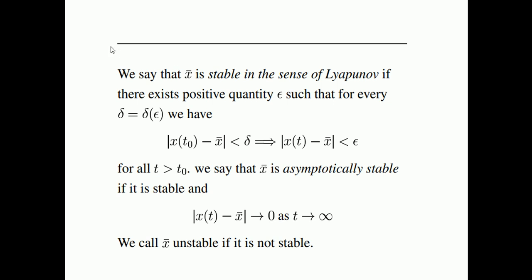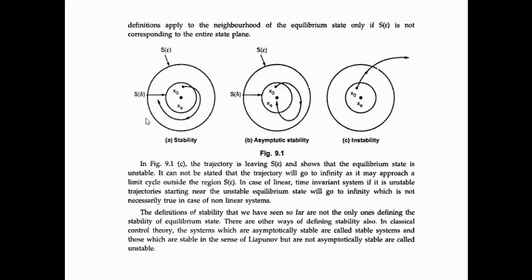What that means is that the distance between the states of the system remains bounded. We will see graphically that it becomes very easy to understand this equation: x(t₀) minus x-bar less than delta implies x(t) minus x-bar less than epsilon. There is another part of stability called asymptotic stability, which means x(t) minus x-bar must approach 0 as t approaches infinity. If that condition is not met, we say the system is unstable.